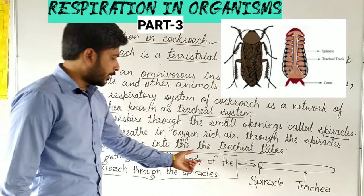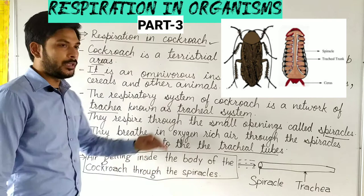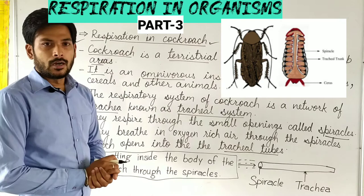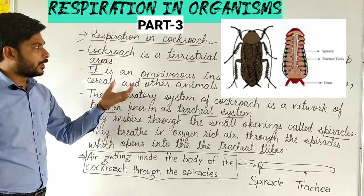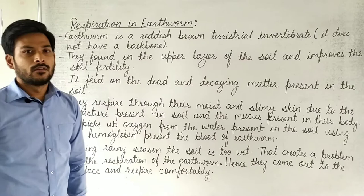Air enters the body of the cockroach through the spiracles — these are the openings on the body of the cockroach. Next is respiration in earthworm.